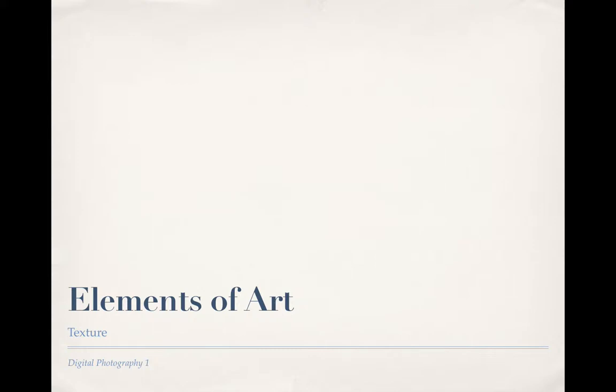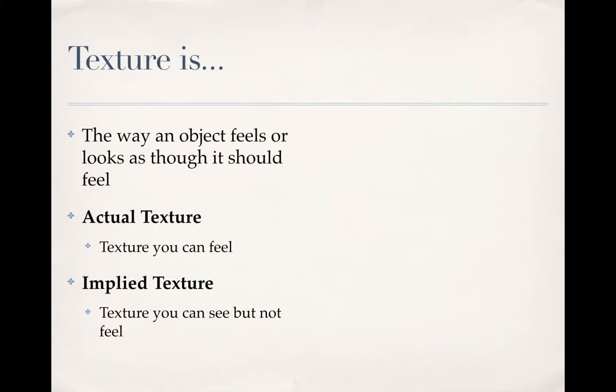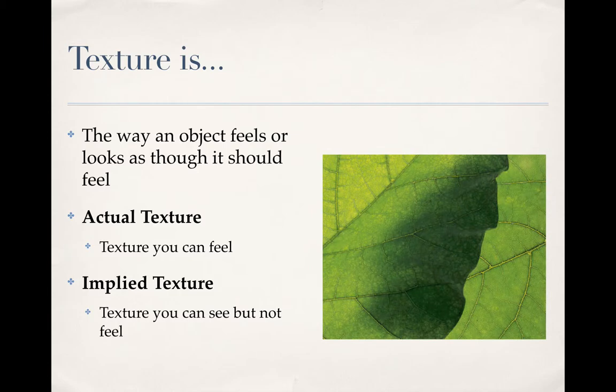In this video we're going to talk about texture. Texture is the way an object feels or looks as though it should feel. If we break that down into two parts, we get actual texture, which is a texture you can feel — the way an object feels. You can also have an implied texture, which is a texture you can see but you can't feel.